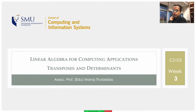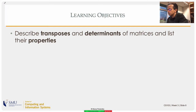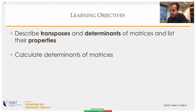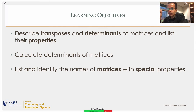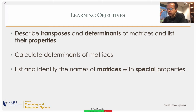Good morning, this is week three of CS103. Today we will be doing transposes and determinants, their properties, and the general formula to compute determinants. Somewhere along the way we will look at matrices with special properties, special kinds of elements or special shapes, and we will look at the names of those matrices, mainly because if you do any kind of web research you will find those names.